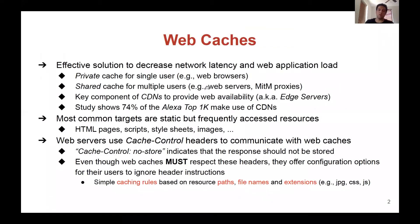Web caches have become an essential component of the internet infrastructure with lots of use cases. Web servers use cache-control headers to define a policy to communicate with web caches. For instance, the cache-control no-store header indicates that the response should not be stored in a cache server. Even though web caches must respect this header, they offer configuration options for their users to override or ignore header instructions. Simple caching rules are based on URL structure such as path, file name, and extension.